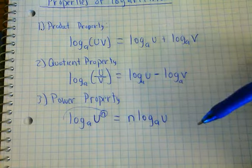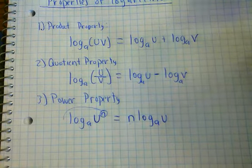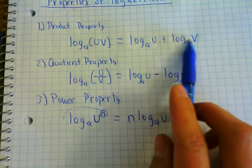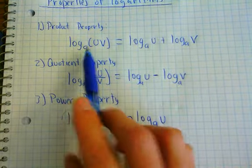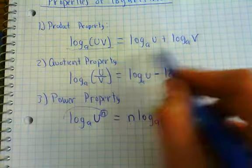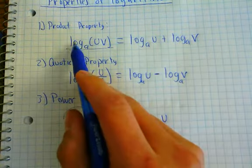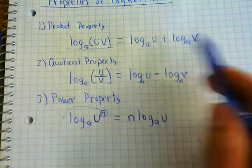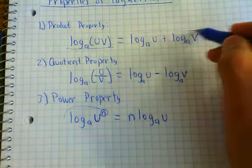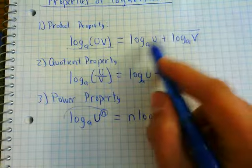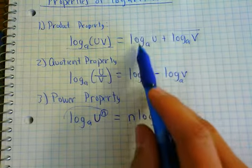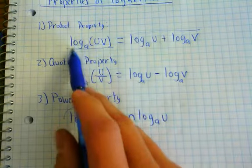The other thing I want to mention before we try some of this: if we can go from one logarithm to multiple logarithms, that means we can also go backwards. That process has a different name. Going from left to right — from one logarithm to multiple — is called expansion. The opposite, going from multiple logarithms to one, is called condensing. We're going to practice both of these processes.